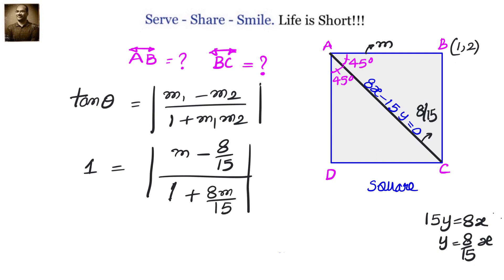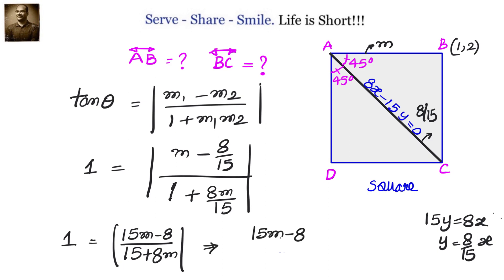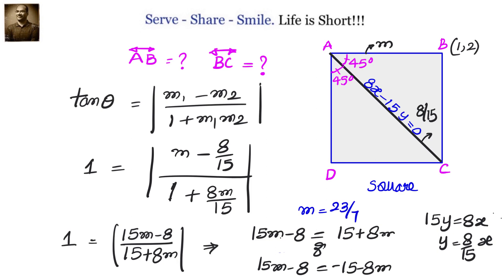Simplifying that to find the values of M: if we know the slope of AB, the slope of BC will be its negative reciprocal, because the product of slopes of two perpendicular lines is minus 1. Simplifying the positive case gives 15M minus 8 equals 15 plus 8M, yielding 7M equals 23, so M equals 23 by 7. The negative case gives 23M equals minus 7, so M equals minus 7 by 23. Therefore, slope of AB is 23 by 7 and slope of BC is minus 7 by 23.